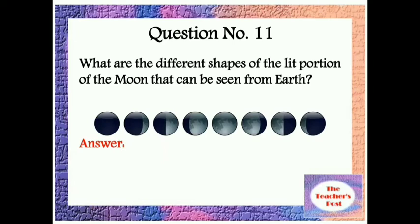Question number 11: What are the different shapes of the lit portion of the moon that can be seen from Earth?